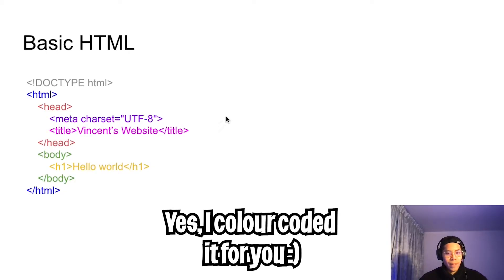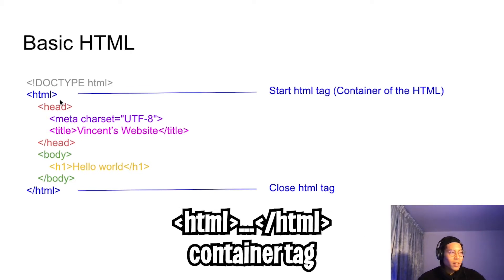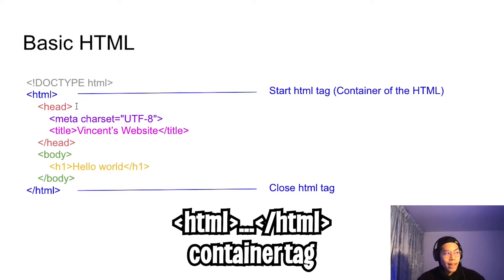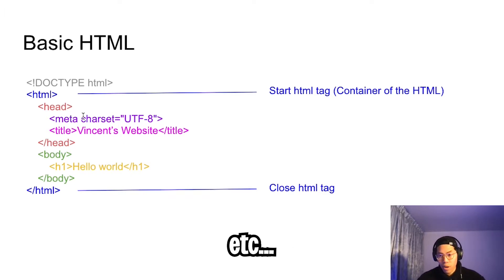Here I have some basic HTML. Like I mentioned last class, the first line basically specifies that this is an HTML file. Next, you'll see this HTML tag, which is basically a container tag. So inside it, it will contain zero or more tags. Inside, as you can see, there's a head, meta, title, and etc.